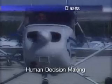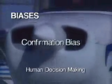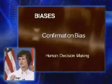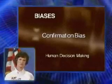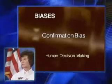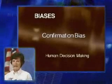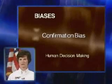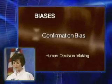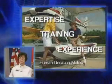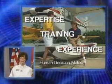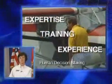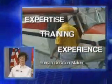Another limitation of human decision making is biases. One example is confirmation bias: human beings have a tendency to look for information that confirms a decision they've already made. We have to remember this when we start looking at decisions we make, to try to be objective and look at both sides. Another influence is the level of expertise, training, and experience each individual possesses. Two pilots faced with the same situation will likely make different decisions due to perceptual filters based on their past experience and the type and amount of training they've had.